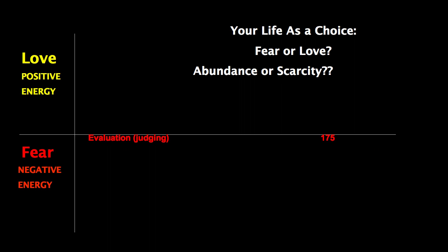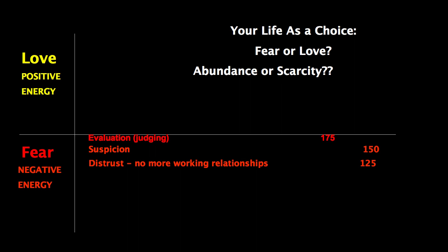Watch how this works: I'm going to evaluate you, now I have some suspicion, and my energy drops to 150. Whenever you get to a distrust relationship with a patient or a staff member, the game is over. Then there's doubt — at energy level 100. People in doubt are in indecision and procrastination; they're not going anywhere.